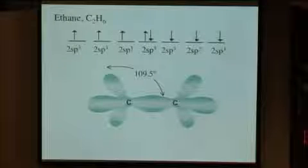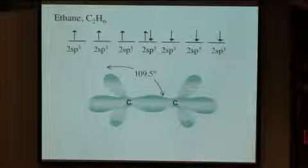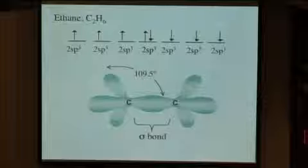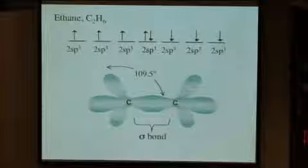We can make one of those bonds with another sp3 hybridized carbon, so we're going to make up one pair here. If we think about that, that's a sigma bond, right? They're coming together along the internuclear axis.